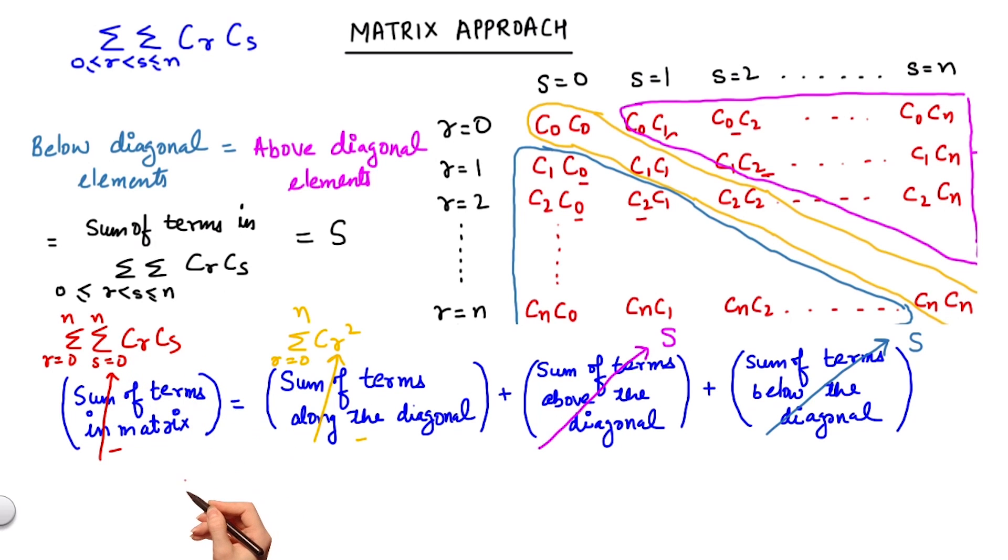Thus my equation becomes double summation CR CS, R from 0 to n, S from 0 to n, equals summation CR square plus 2 times S.